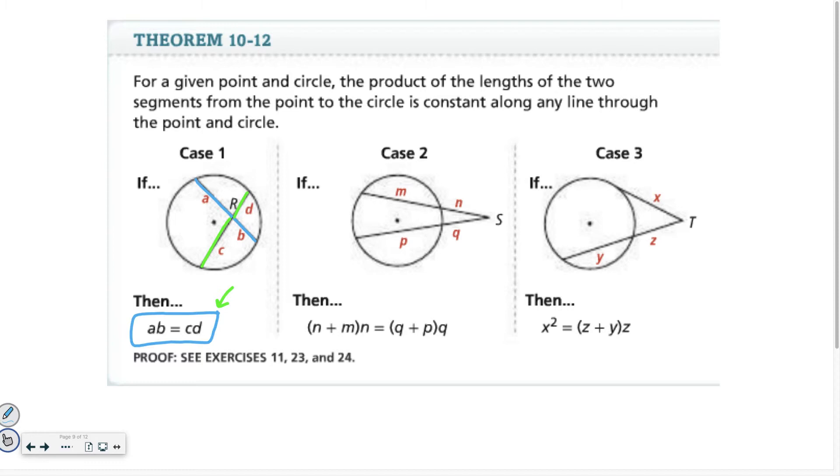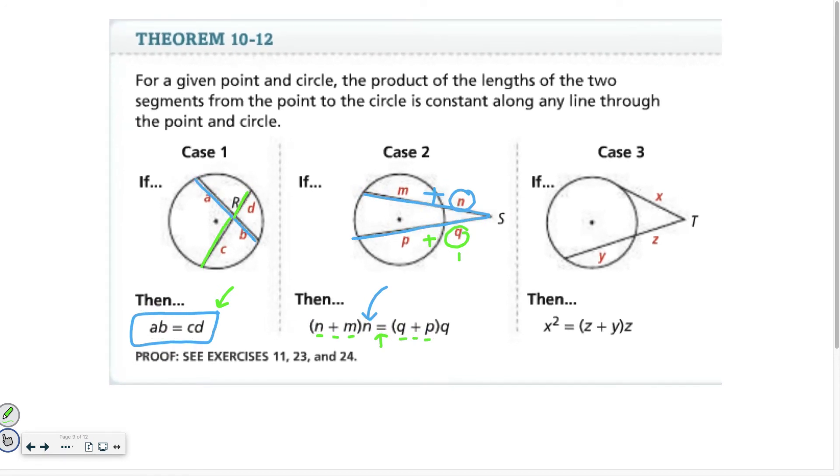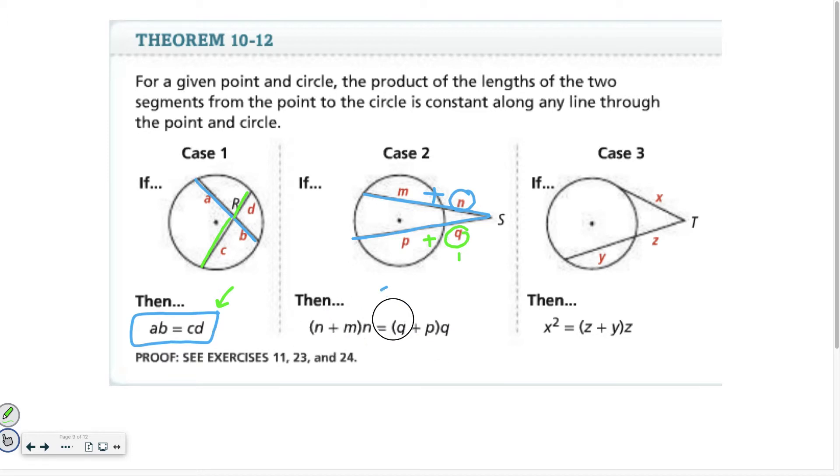Now case two and case three get slightly more complicated but not too bad. The way that case two works is, let's say both of the lines cut through the circle and meet outside of the circle. The way it works is you take the portion that's outside of the circle and you multiply it by the sum of the two, so in this case N plus M. And you set it equal to the outside of the circle times the quantity of Q plus P in this case. And then you can solve from there. This is where they give you a bunch of numbers or a few numbers and then you end up solving for one of them.